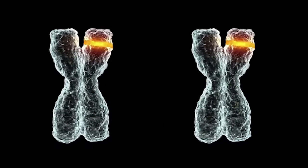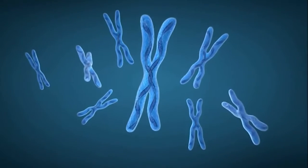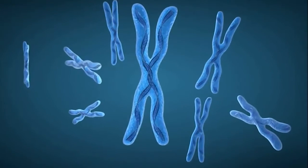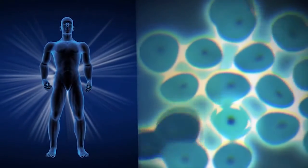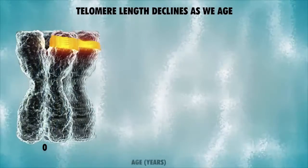When we're young, our telomeres are long and strong with plenty of genetic code to spare. We enjoy healthy cell division and efficient tissue regeneration. But each time cells divide, telomeres break off another piece of genetic code.